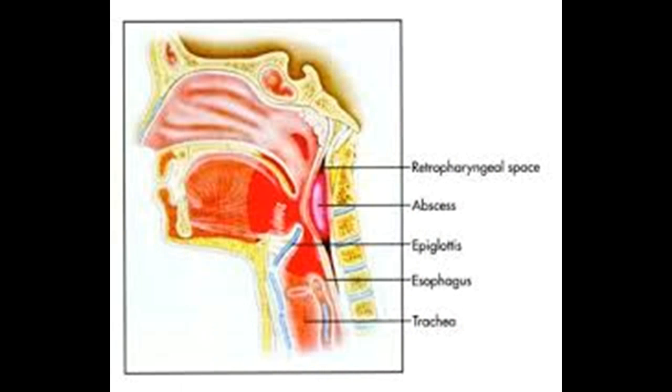A retropharyngeal abscess can be life-threatening if it blocks the passage of air to the lungs. Retropharyngeal abscess, or RPA, is an abscess located in the tissues in the back of the throat behind the posterior pharyngeal wall — the retropharyngeal space. Because RPAs typically occur in deep tissue, they are difficult to diagnose by physical examination alone.